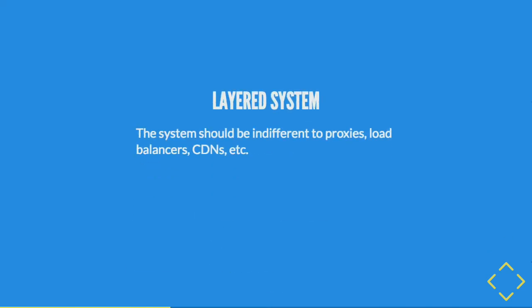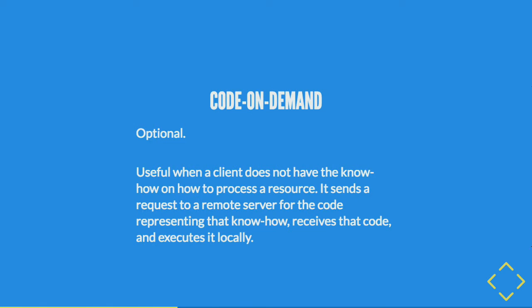Layered system means a RESTful system should be able to have layers put in between — like proxies, load balancers, or CDNs — and nobody should be the wiser. The server and client don't need to know something was in between them. Code on demand is optional but part of REST — you can send code in a RESTful way that tells the client how to understand a resource. You might think of this as client-side validation, shipping JavaScript that can run validation rules.